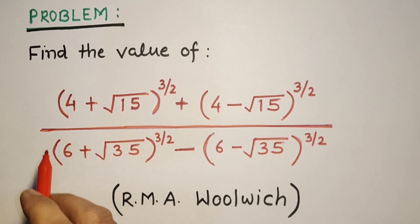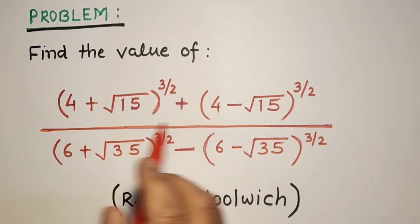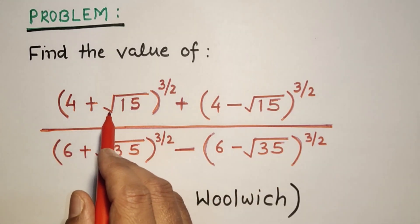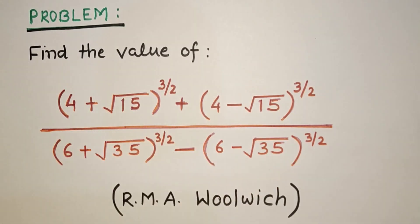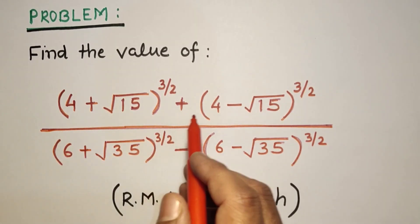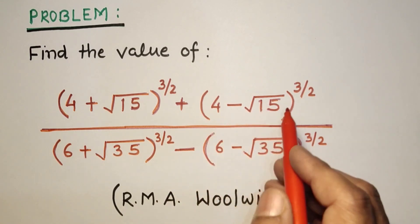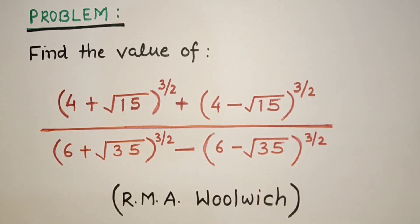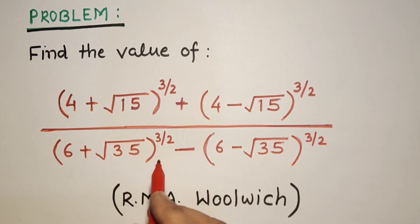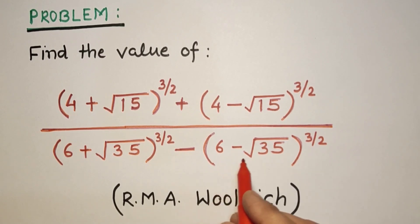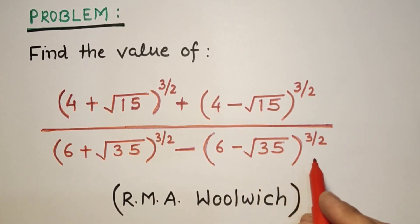We have to find the value of this fraction. The numerator is (4 plus square root of 15) raised to the power 3/2 plus (4 minus square root of 15) raised to the power 3/2, and in the denominator it is (6 plus square root of 35) raised to the power 3/2 minus (6 minus square root of 35) raised to the power 3/2.